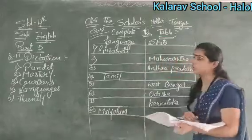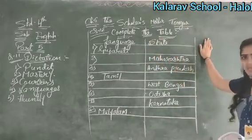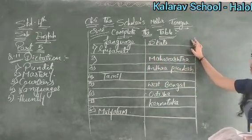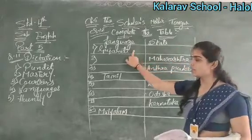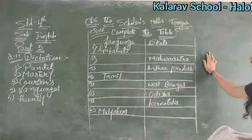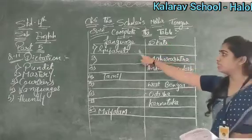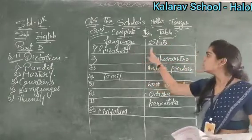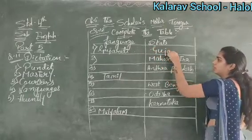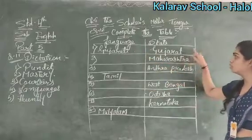Now we are moving further with question number 12, section C: Complete the following table. Here you will fill in two columns — Languages and State. The first language given is Gujarati. Children, the people who live in Gujarat state speak the Gujarati language. So in the state column we write Gujarat. Gujarati language is used in Gujarat state.